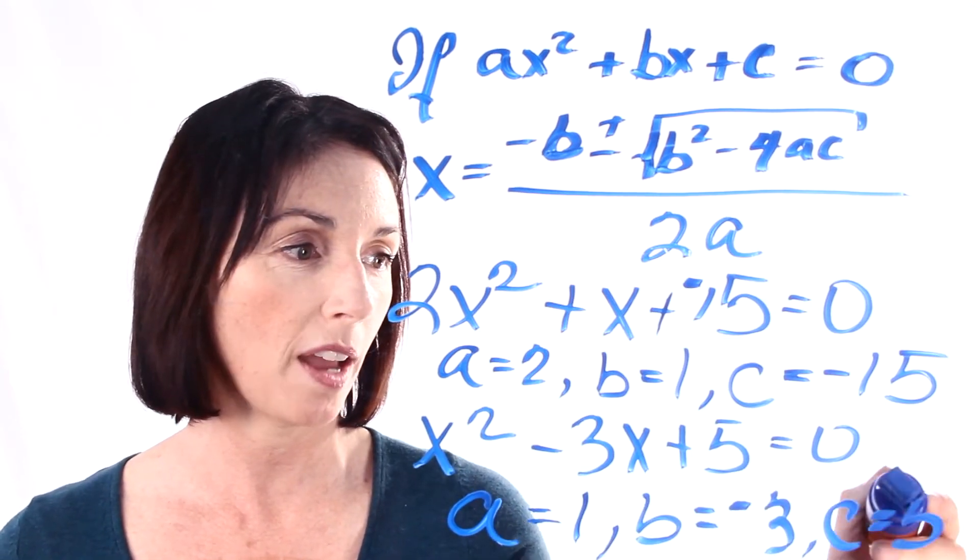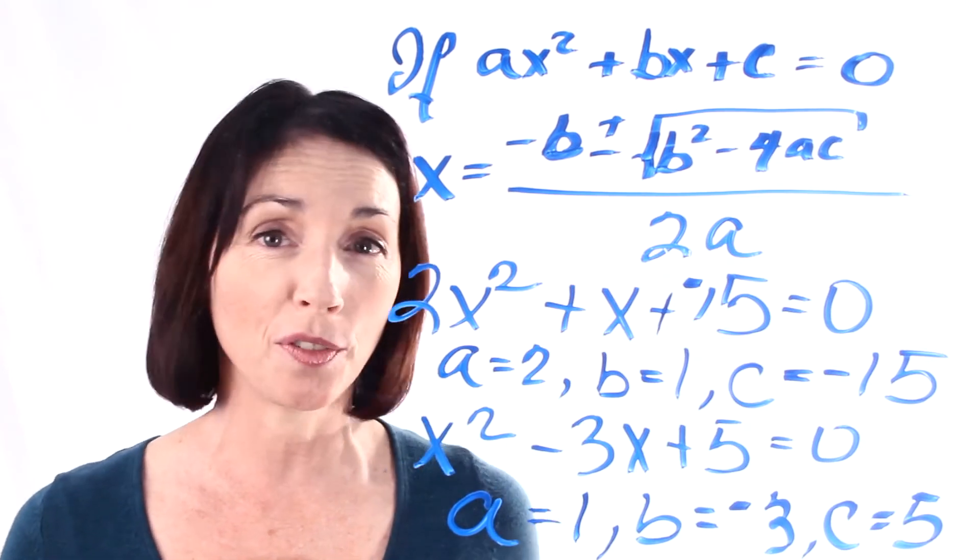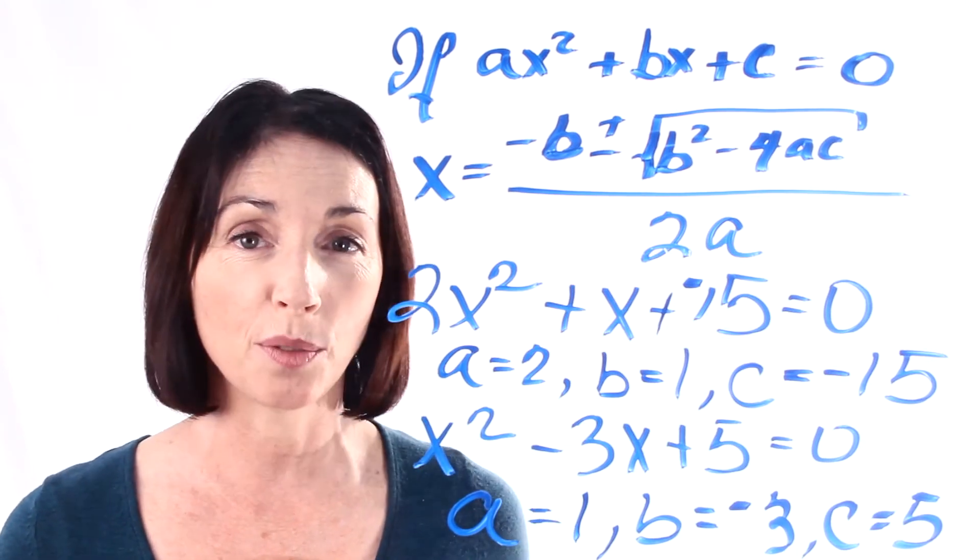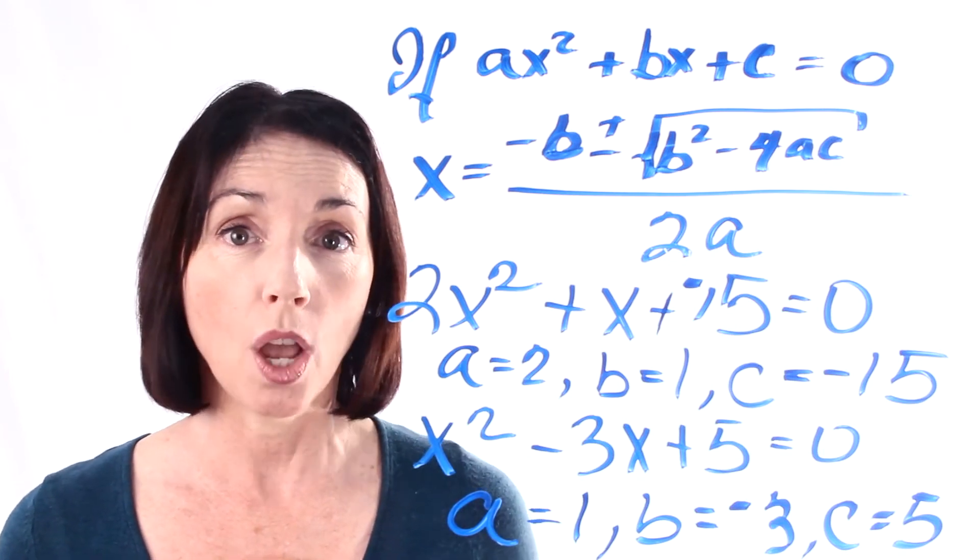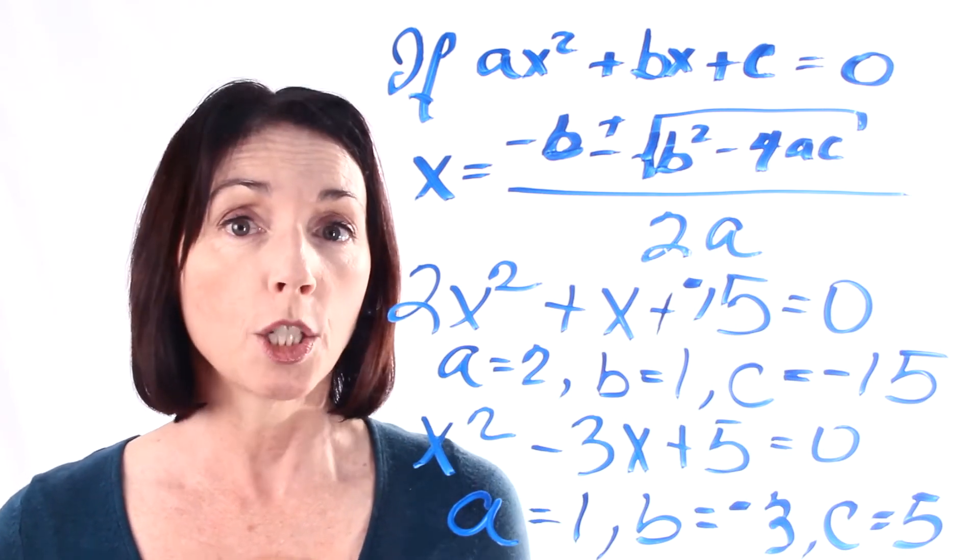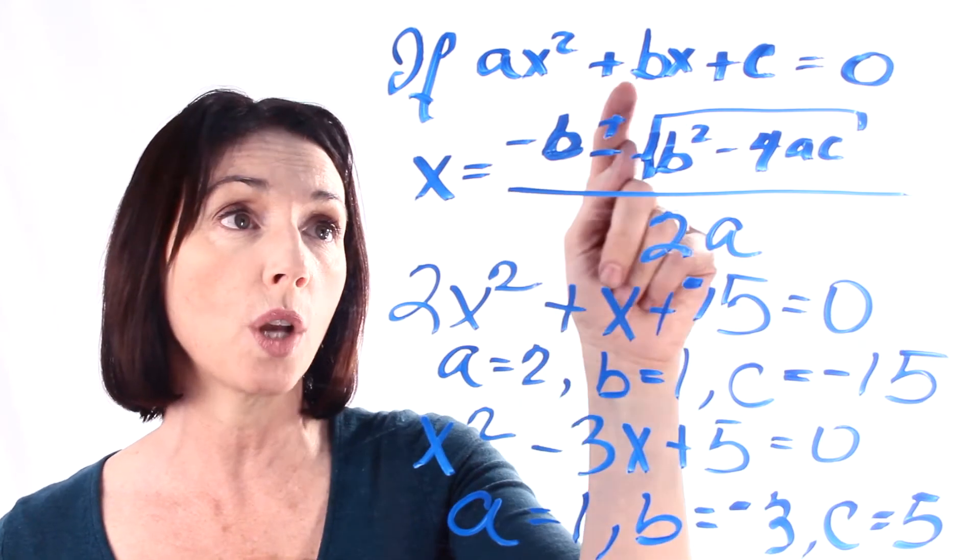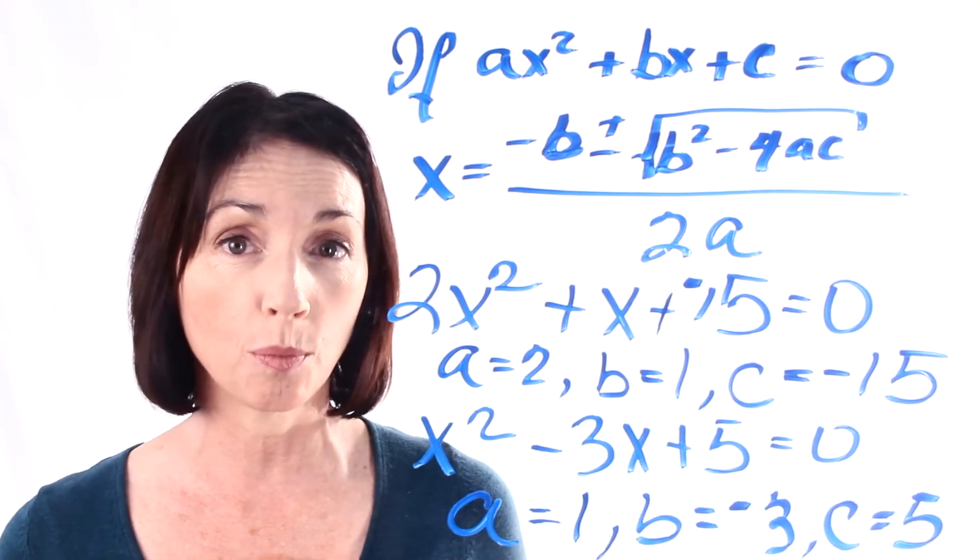So c equals 5 in this case. Now, this might seem like a trivial step going through and just writing down what a, b, and c are. But it actually isn't. It's actually really important. The whole quadratic formula depends on the values of these two coefficients and this constant. So you have to get them right.